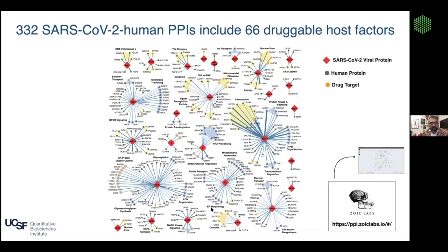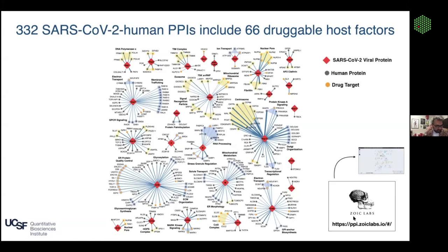Here's a look at the original map we generated: 332 SARS-CoV-2 human protein-protein interactions, including 66 different druggable host proteins corresponding to 69 different drugs or compounds. The red diamonds are the viral proteins, the circles are the human proteins, and if it's orange we think it's a druggable target. We collaborated with a company in Hollywood called Zoic Labs — involved in making films like Titanic and Life of Pi — to create a very interactive database and website where anyone can explore this data intuitively.